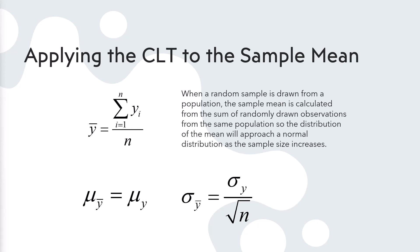The standard deviation of the sampling distribution of means equals the original population standard deviation divided by the square root of n. As n gets bigger, we have a smaller standard deviation of means — those means become more and more compact around the population mean. This makes the mean a consistent estimator, because as you get bigger and bigger samples you have less variation from the true population mean. So the sample mean is both unbiased and consistent.